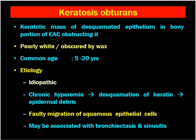Keratosis obturans is defined as a keratotic mass of desquamated epithelium in the bony portion of the external auditory canal, obstructing it. Wax is produced in the cartilaginous portion of the external auditory canal, whereas keratotic material develops on the bony portion. It is partly white in color, though it can appear blackish or yellowish when obscured by wax.